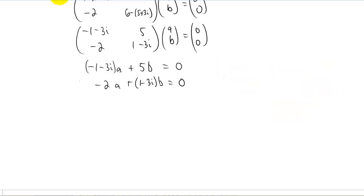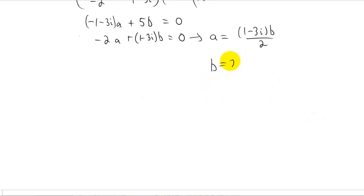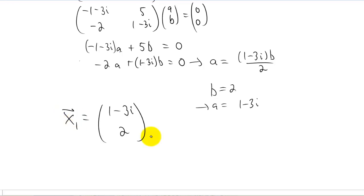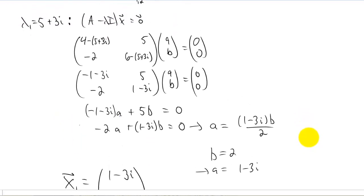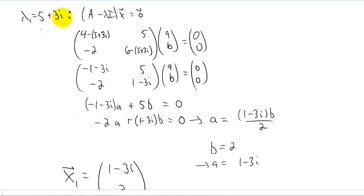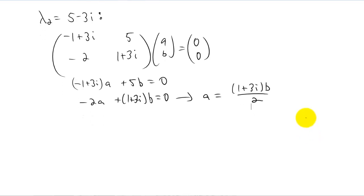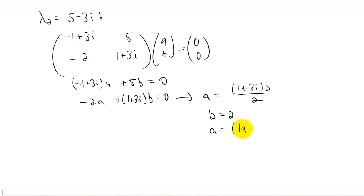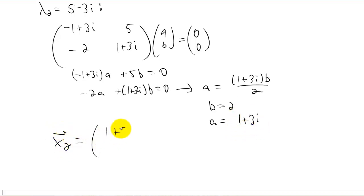I'm going to erase all that and solve one of these equations for one of the variables. I'll say A is equal to one minus three i times B over two. Since we determined that these two equations are the same, we can choose B to be whatever we want — I'm going to choose B equals two. That gives us A equals one minus three i, and an eigenvector of [one minus three i, two]. Now for our other eigenvalue, five minus three i, going through that whole process gives us A equals one plus three i, which gives a second eigenvector of [one plus three i, two].